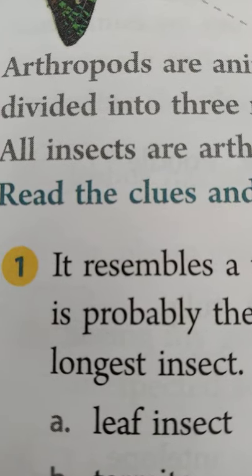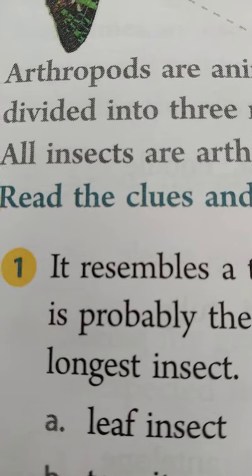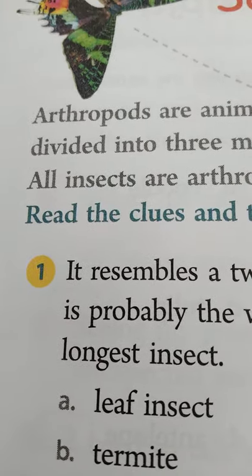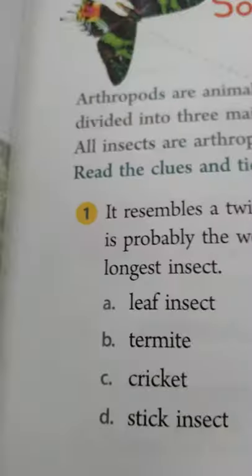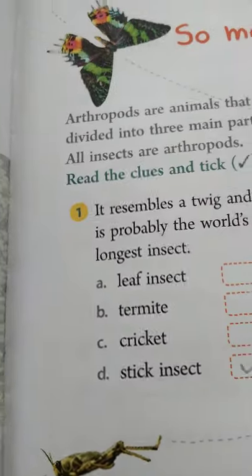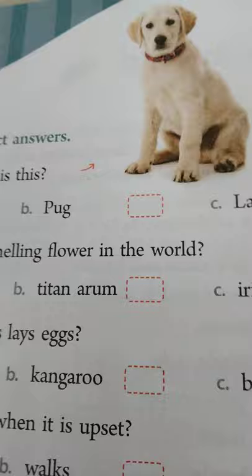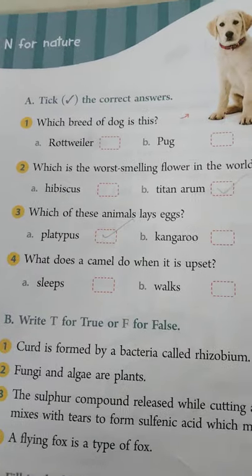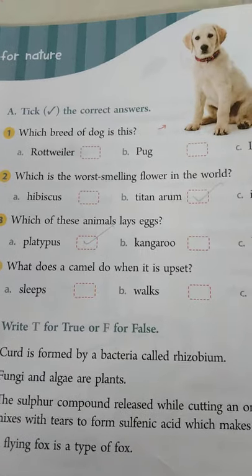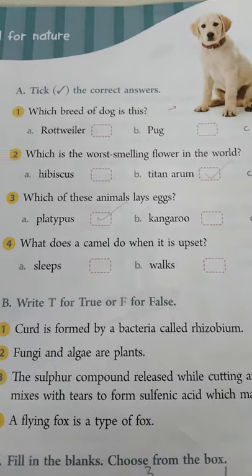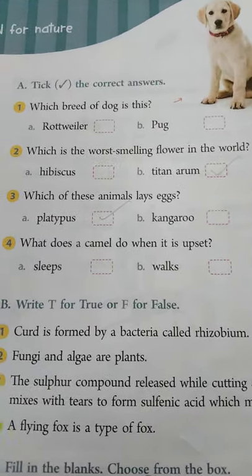Arthro means jointed, podes means legs. Come to the next page. Here on page number 8, you have N for Nature.